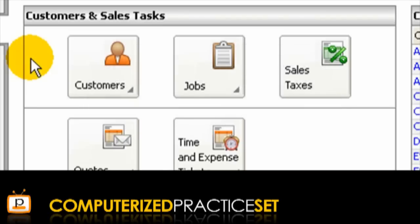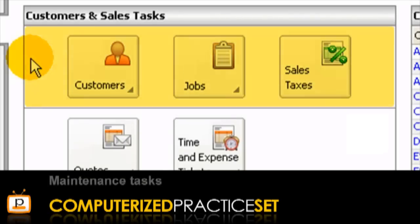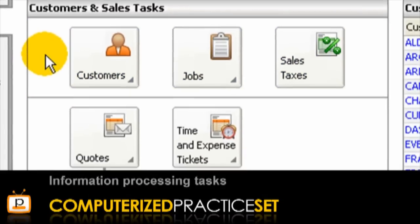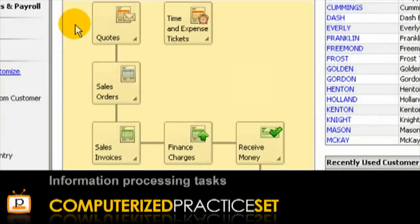The task icons are divided into two sections. Maintenance Tasks icons are at the top and are used during the setup process to enter information into the master files of the business. Information Processing Task icons are shown in the lower part of the Tasks section and are used to record and process transactions relating to a particular business cycle.